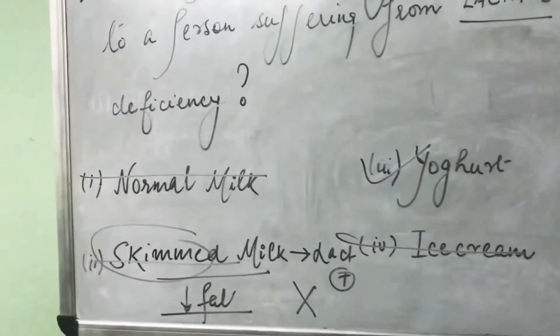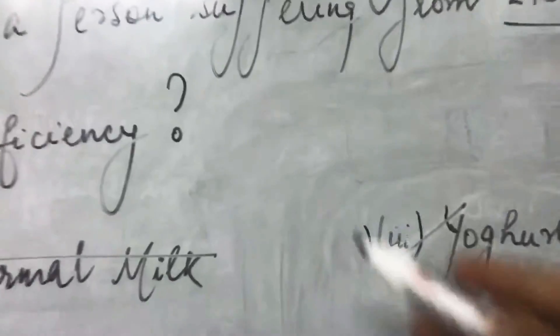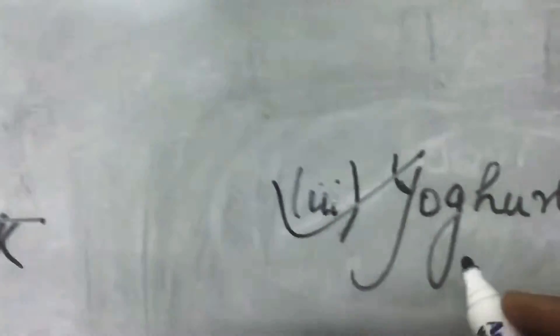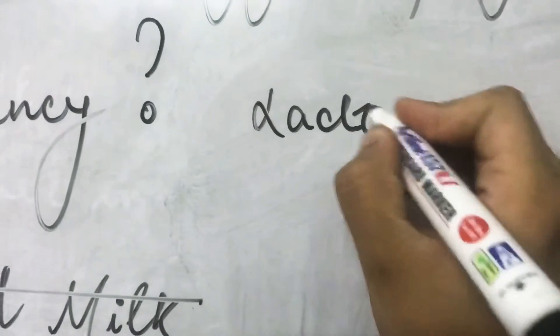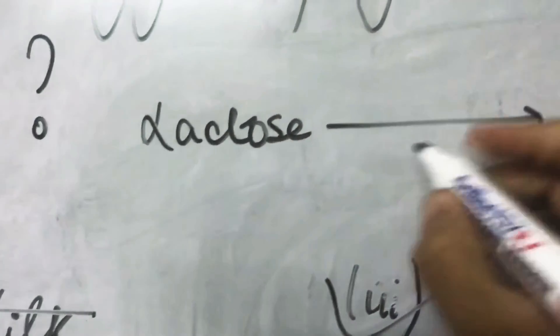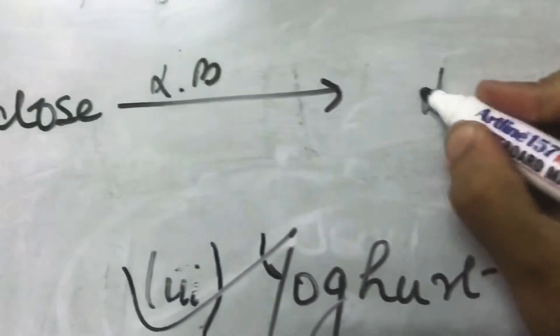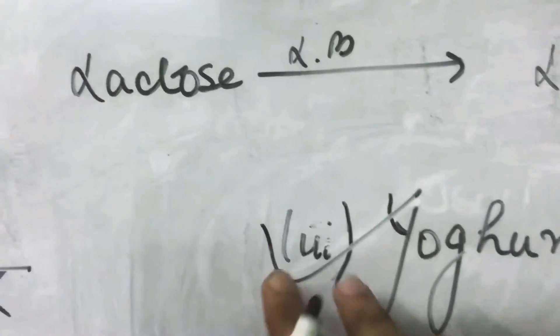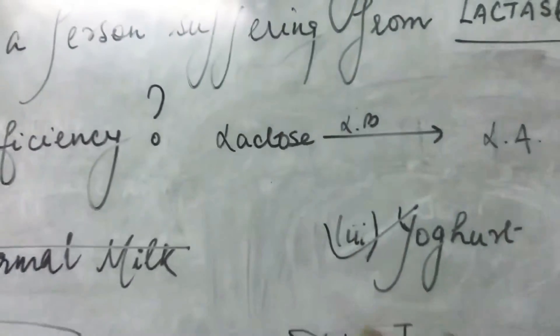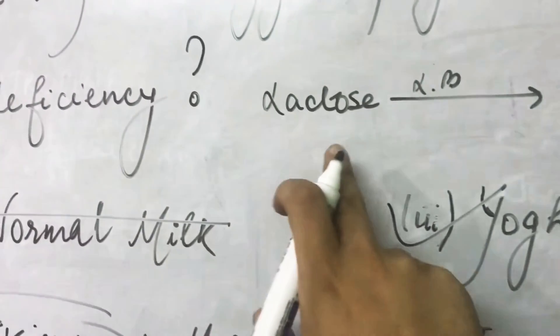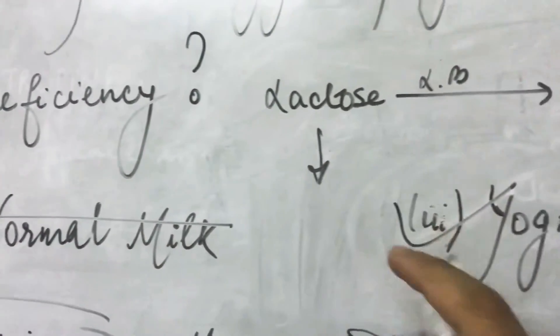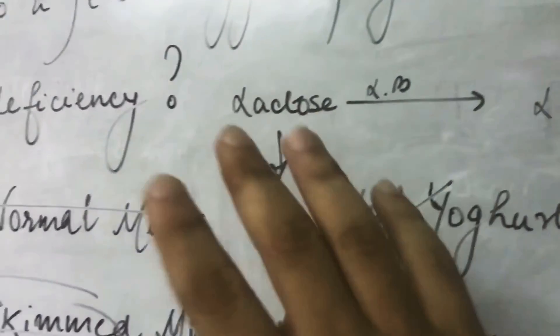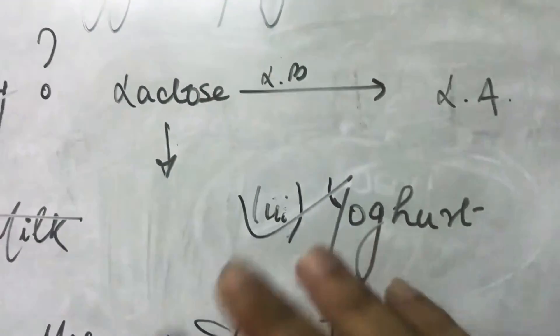The correct answer is yogurt. Yogurt, known as Dahi in Hindi, is formed when lactobacilli ferment the lactose present in milk into lactic acid. So the lactose is converted into lactic acid, which means the lactose content is definitely reduced. Hence, yogurt can easily be given to a person who has lactase deficiency.